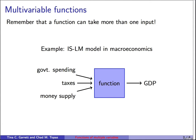Another example is the ISLM model in macroeconomics, which stands for investment, savings, liquidity preference, money supply. If you know government spending, taxes, and money supply, then there's some function that gives you as an output the gross domestic product of the country. This is a multivariable function that depends on three things.